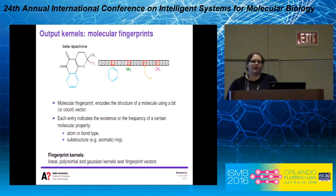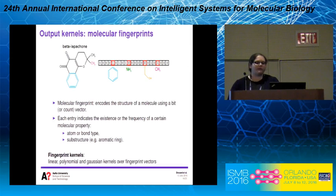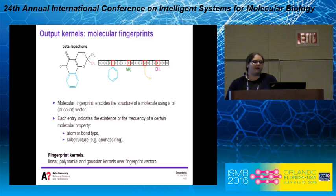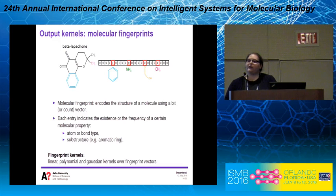For the output kernel, we used molecular fingerprint information. A molecular fingerprint encodes the molecular structure as a vector, where each value corresponds to a specific molecular property such as atom type or aromatic ring. We defined three output kernels: linear, polynomial, and Gaussian kernels over this fingerprint vector.